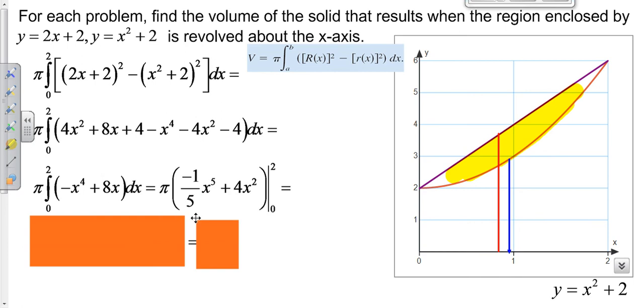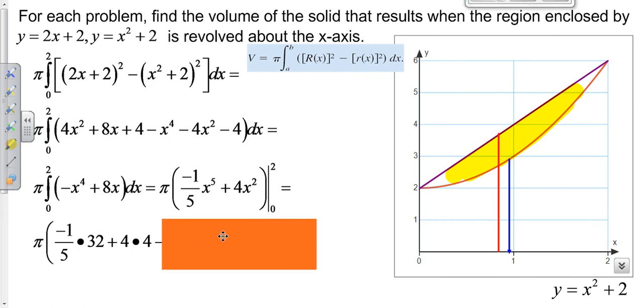We can integrate by increasing our exponents. Then we plug in our 2, minus what we get when we plug in 0. And we end up getting 48π over 5.